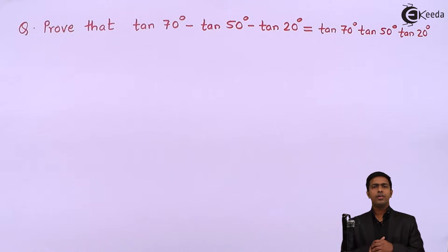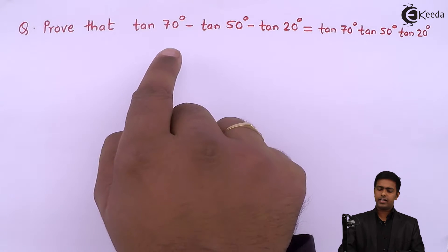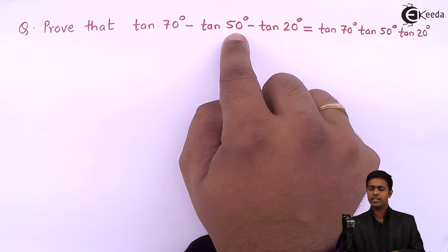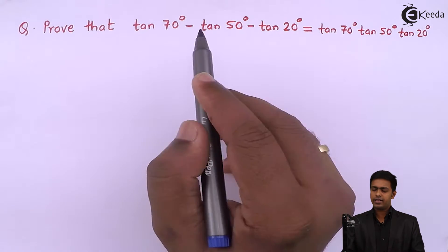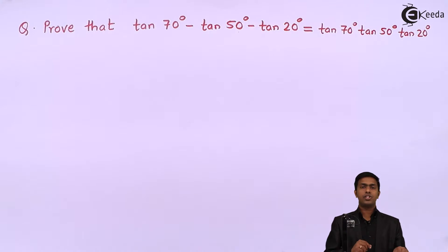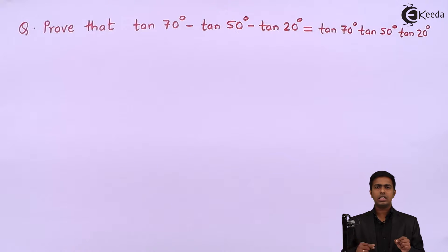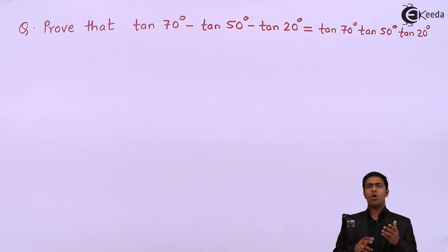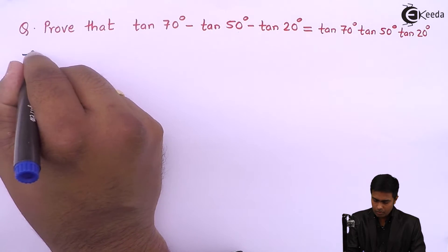Whenever we have tan as the trigonometric function on both sides, observe that any two angles — say 50° and 20° — add up to the third angle 70°, or subtracting any two angles like 70° and 50° gives the third angle 20°. So there is a relationship between the three given angles. We have observed two things: tan functions on both sides, and the angles are related by addition or subtraction.